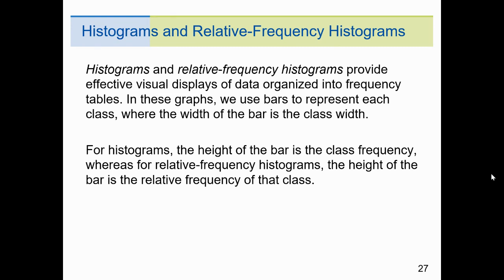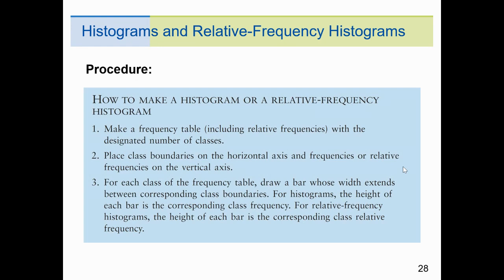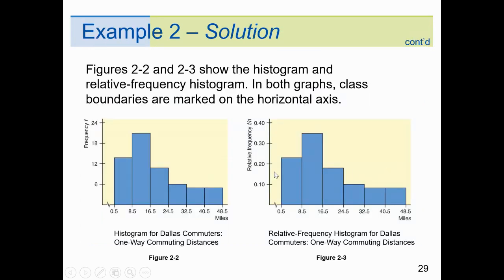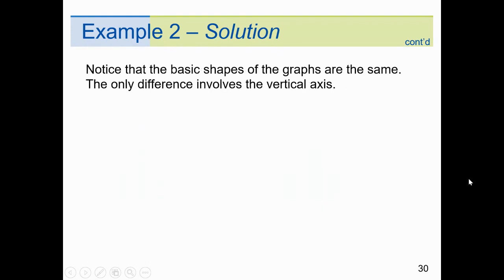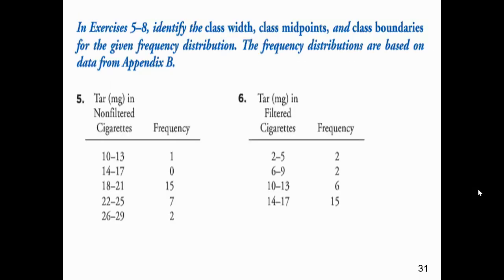All right. Histograms and relative frequency histograms provide effective visual displays of the data organized into frequency tables. In these graphs, we use bars to represent each class, where the width of the bar is the class width. All right. For histograms, the height of the bar is the class frequency, whereas in relative histograms, the height of the bar is relative. All right. It's a percentage. And he's telling us how to go about it here. We have a horizontal axis and a vertical axis. All right. Now, if you notice here, here we have a regular frequency count here on the, I'll call it the Y scale. We have the data as percentages, as decimals. Notice the graphs look exactly the same. All right. Because it's the same data. Here we're using percentages or decimals, and here we're using raw count. The graphs look exactly the same. Notice the basic shape of the graphs are the same. The only difference is the vertical axis, also called the Y axis.